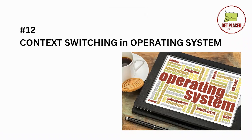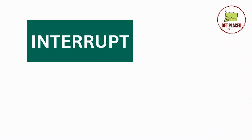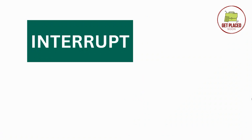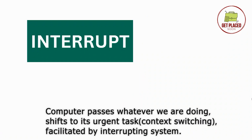Before getting started with context switching, imagine you are using your computer and suddenly some new important task demands attention — like a message arriving, or a timer runs out, or an alarm beats. This process of another task demanding attention is known as an interrupt. The computer pauses whatever you are doing, saves its current state, and shifts to the urgent task. This shift is known as context switching and it is facilitated by the interrupting system.